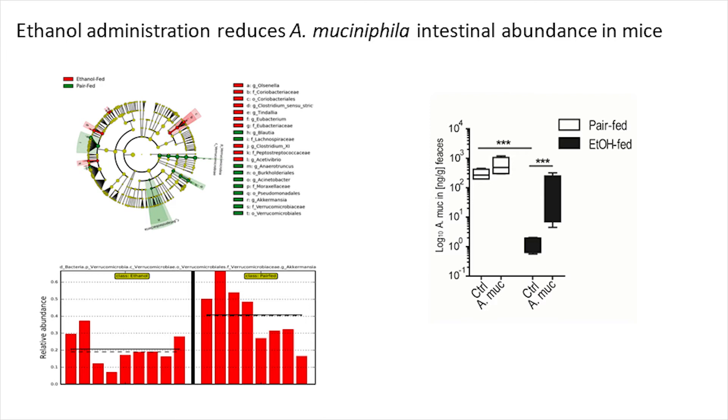So in the next step we were interested whether gavaging or administration of Akkermansia muciniphila to rodents could be beneficial. We used our mouse model, gavaging ethanol approximately over two weeks, and then gavaged three times weekly Akkermansia muciniphila to those mice.